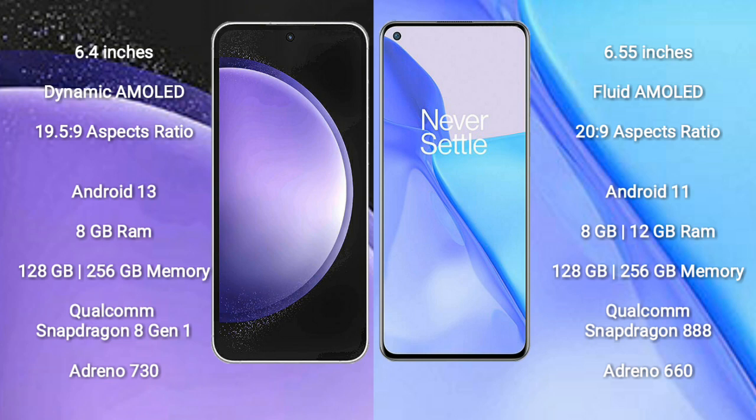OnePlus 9 comes with 8GB or 12GB RAM and 128GB to 256GB internal storage. It is powered by the Qualcomm Snapdragon 888 processor with an Adreno 660 GPU.